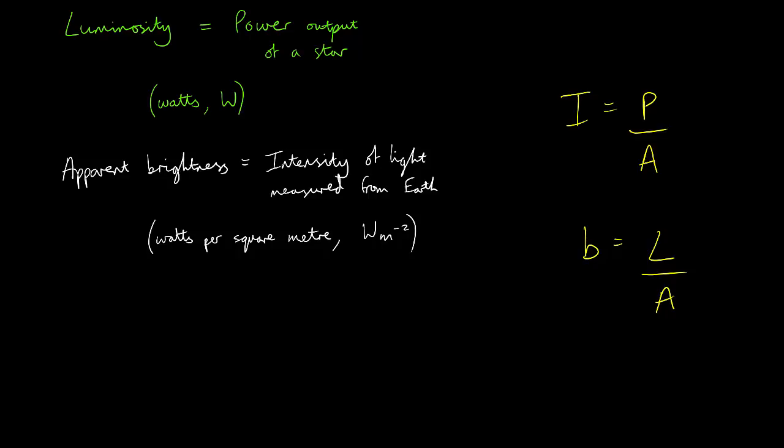When light is emitted from a star, it travels in all directions spreading out as it does so. It is like an inflating sphere of light where the power is being spread across the surface area of that sphere. So the area in our equation is the surface area of a sphere with a radius equal to the distance from the star.